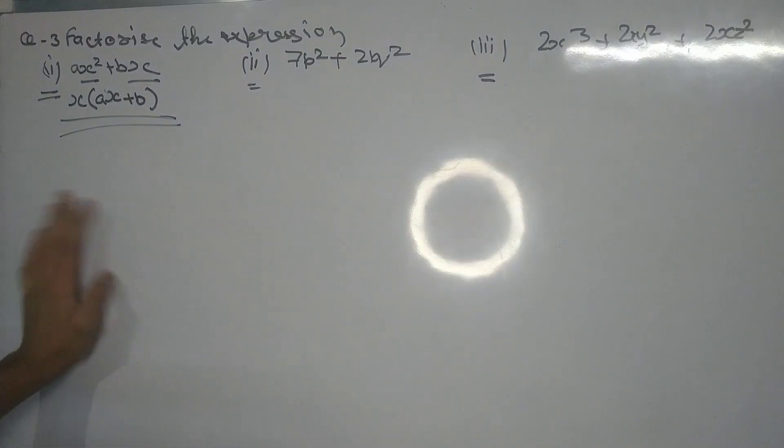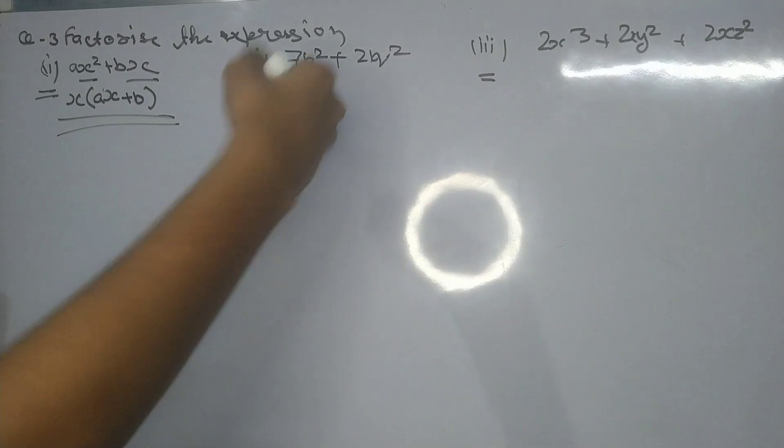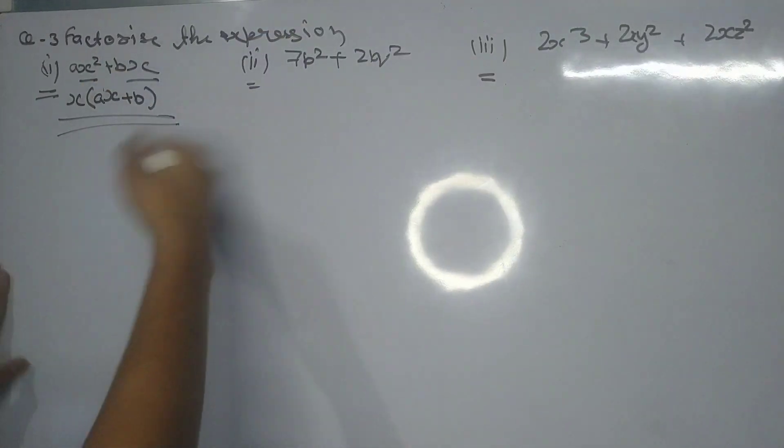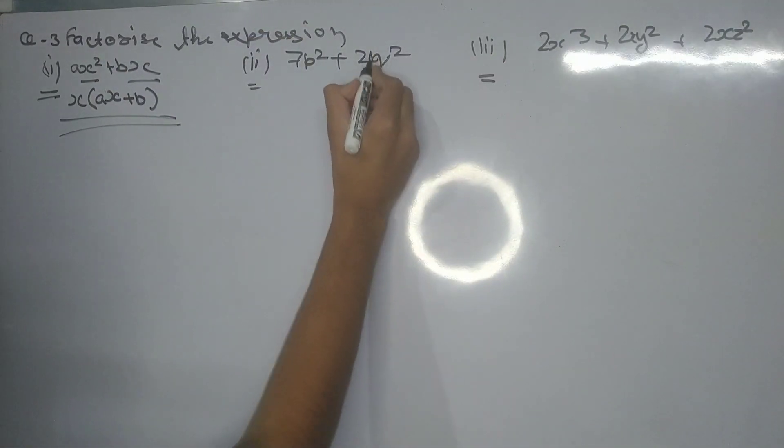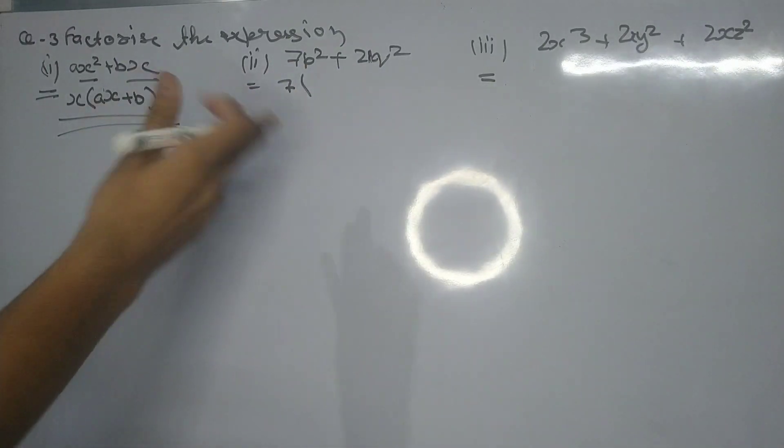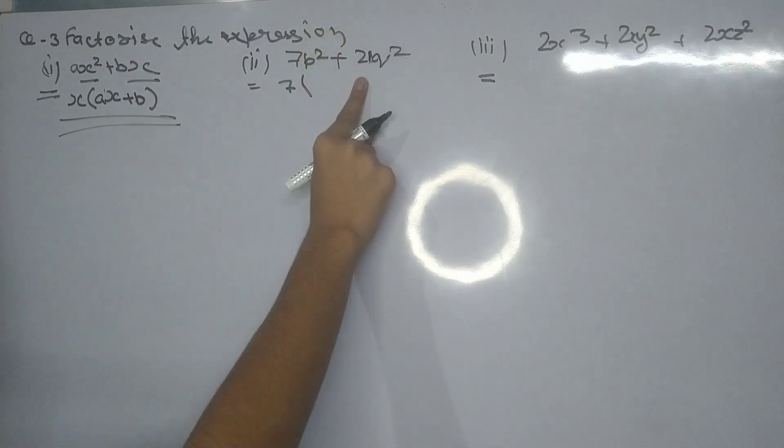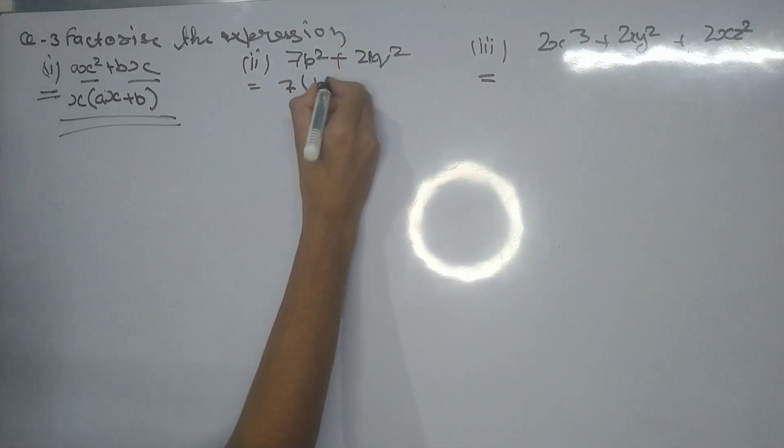Now let's come to part (ii). We will do it the same way. Here we have 7p squared plus 21q squared. 7 is the common factor because 7 divides 7 and 7 also divides 21. We will be getting 7 times (p squared plus 3q squared).